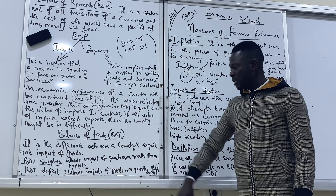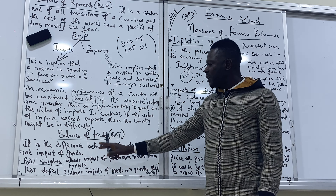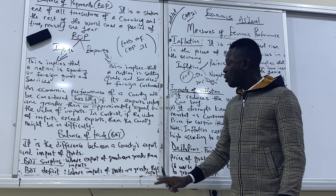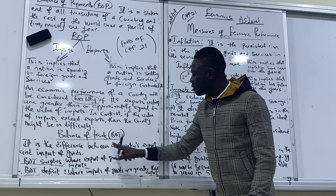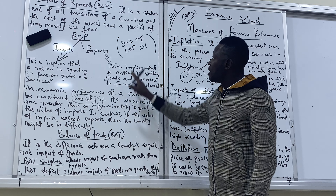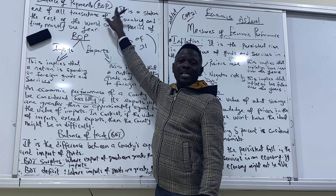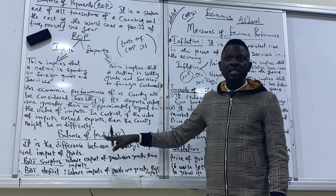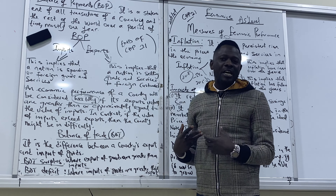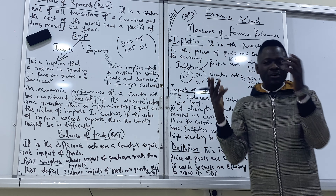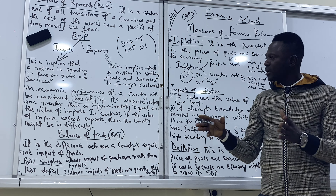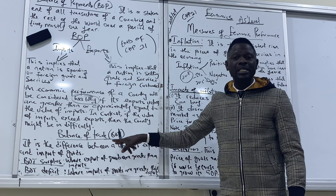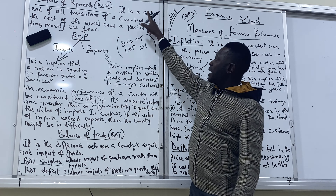Balance of trade is the difference between a country's export and import of goods. Without balance of trade, we can't get balance of payments — as soon as balance of trade is happening, balance of payments captures the transaction. The statement that records our exports and imports is the balance of payments.